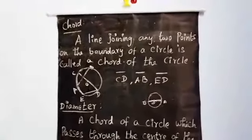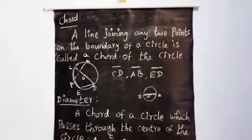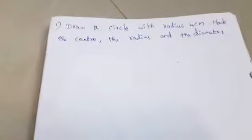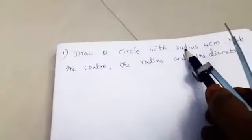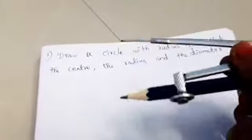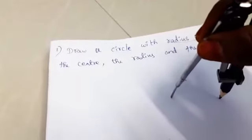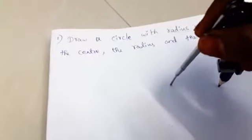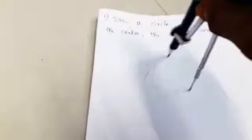I hope you all understand circle, chord, diameter, and radius. Now take your notebook and pencil. Draw a circle with radius four centimeters and mark the center, radius, and diameter. Take a compass and a short pencil and insert the pencil into the compass. Then using the compass, measure four centimeters on the scale — from zero to four centimeters. Take four centimeters and draw the circle.